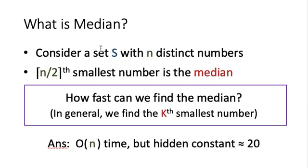Consider a set S with n distinct numbers. If we sort the set S, the number that lies in the middle is called the median — in other words, it is the n/2 smallest number in the set. This lecture concerns how fast we can find the median, or more generally, we may slightly relax the problem to find the kth smallest number in the set, given k as a parameter.